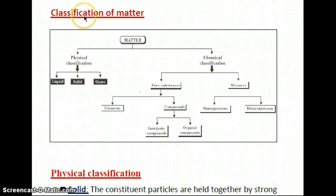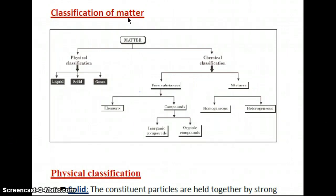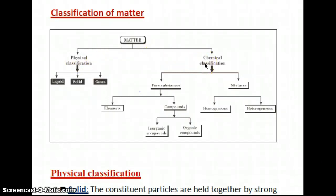Hello students, let us start with the first topic of chapter number 1, which is some basic concepts of chemistry. The first topic is classification of matter because chemistry is a study of matter. Matter can be classified in two different ways: physical classification of matter and chemical classification of matter. First we are going to see physical classification of matter.